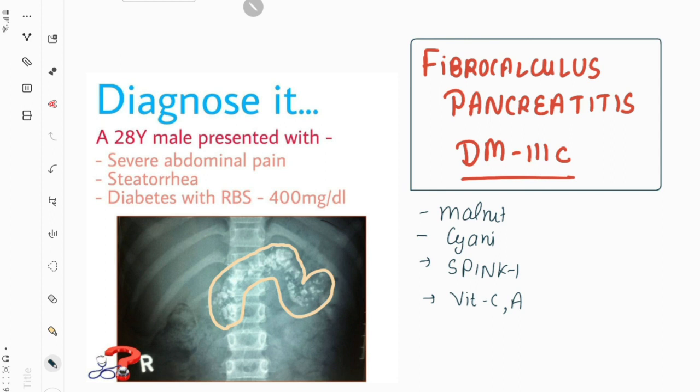Now let's discuss the presentation of this case — by which symptoms this patient can present to us. We see the presence of severe abdominal pain. Why does this pain occur? This pain is due to necrosis of the pancreatic tissue, which leads to release of inflammatory mediators that stimulate the nerve endings, causing the pain.